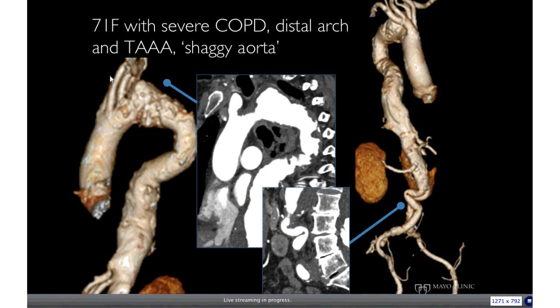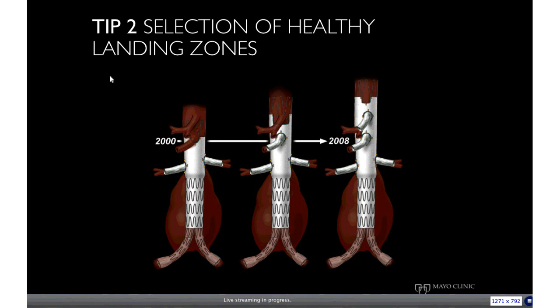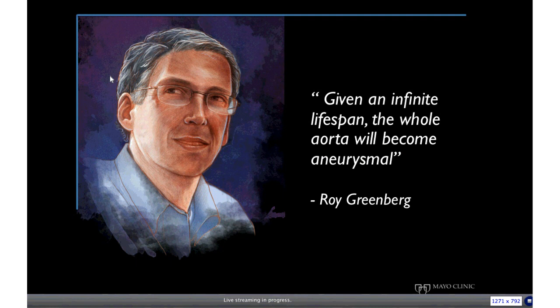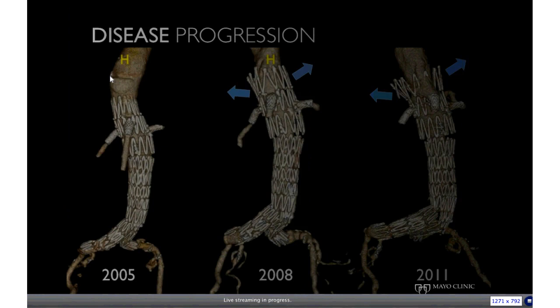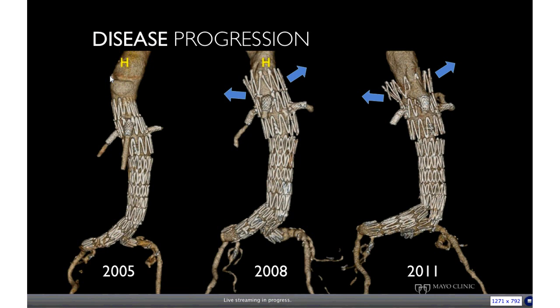The second tip is to appropriately select your landing zones, which should be placed in healthy aortic segments. Roy Greenberg used to say that given an infinite lifespan, the whole aorta would become an aneurysm. On this slide, a patient underwent fenestrated repair in 2005 with some irregularity already in the thoracic aorta. Over the years, the top stents started flaring and the device migrated downward, compromising patency of side branches and leading to an endoleak nearly impossible to treat endovascularly. Fenestrated and branch grafts are not immune to type 1 endoleak, and these patients may be even more prone to disease progression.